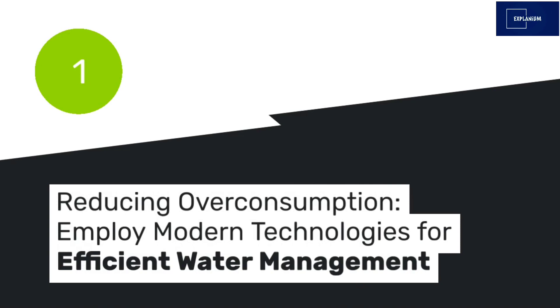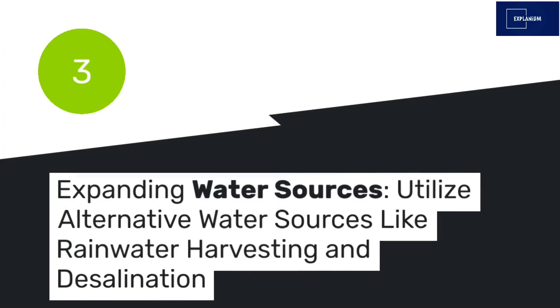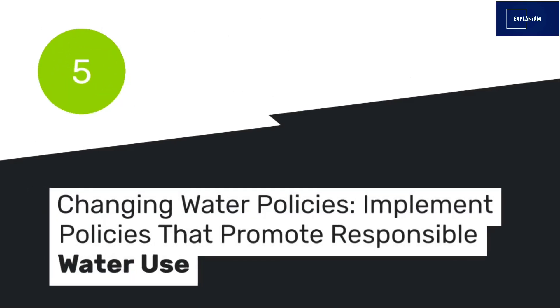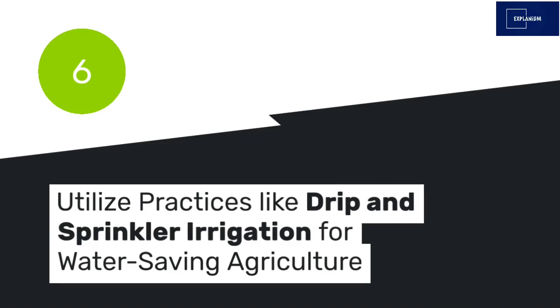Strategies for addressing water scarcity: 1. Reducing overconsumption — employ modern technologies for efficient water management. 2. Improving water efficiency — upgrade infrastructure and minimize water wastage. 3. Expanding water sources — utilize alternative sources like rainwater harvesting and desalination. 4. Protecting water resources — restore and conserve natural water sources. 5. Changing water policies — implement policies that promote responsible water use. 6. Microirrigation techniques — utilize practices like drip and sprinkler irrigation for water-saving agriculture.